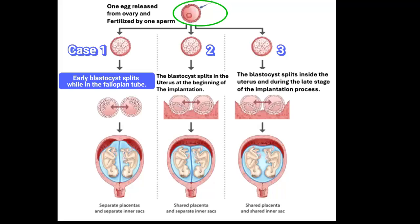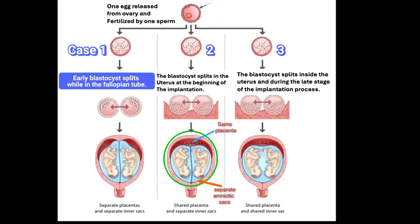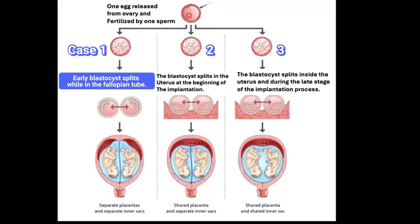In the second case, one sperm fertilizes one egg and the blastocyst travels to the womb and splits at the beginning of the implantation process, resulting in twins sharing one placenta but with separate amniotic sacs — this is the most common type. The third case shows one sperm fertilizing one egg; the egg moves to the womb, starts implanting itself into the inner lining, and splits in the process, resulting in twins that share both placenta and amniotic sac.